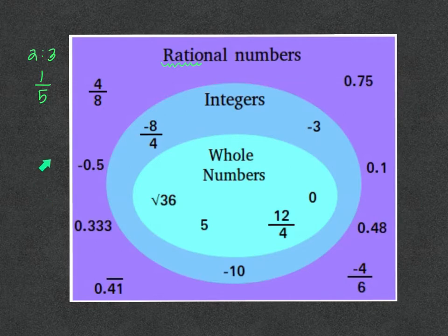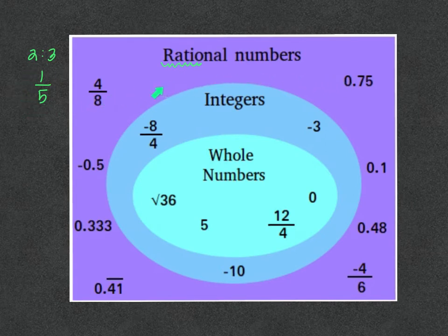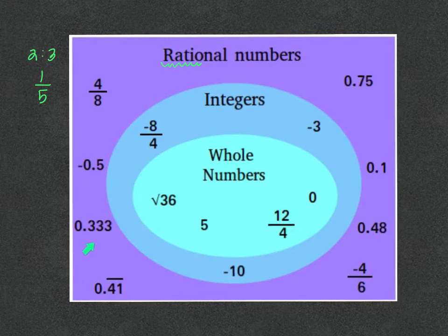So just a quick recap: rational numbers — it's got the word ratio in it, so remember how you can write ratios, and that includes a fraction. So any number you can write as a fraction is a rational number. Also decimals, and that includes positives and negatives.